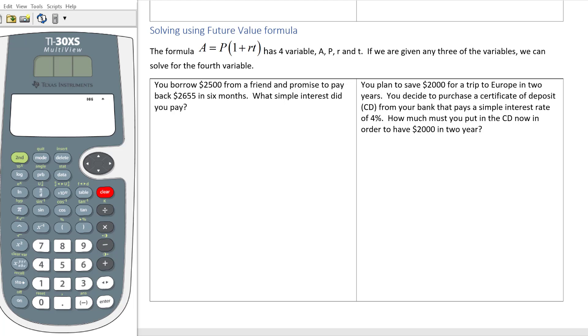In our last examples, we were always looking for the future value A, but if I'm given any three of the four variables A, P, R, and T, I can always solve for the fourth variable.